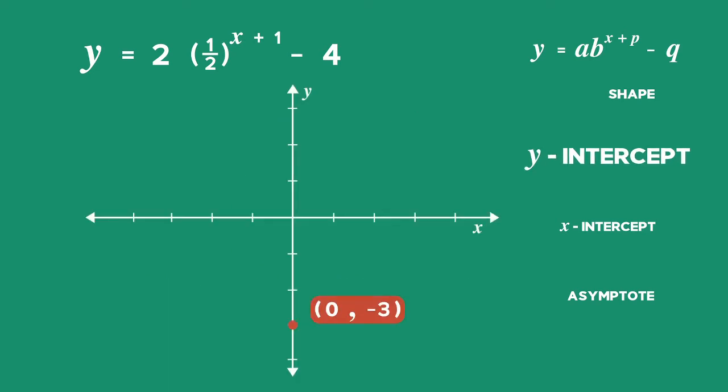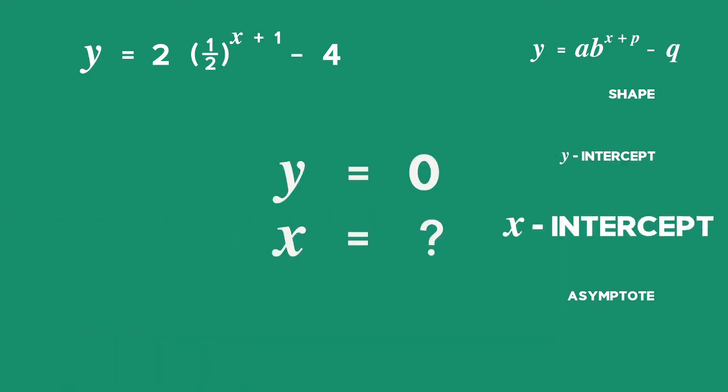Let's plot this point on the graph. We find the x-intercept by making y equal to 0 and solving the exponential equation for x.